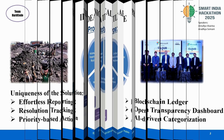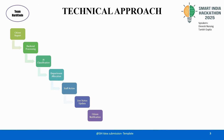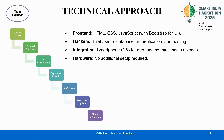The real power of our solution lies in its intelligent backend. When a report is submitted, an AI engine automatically classifies the issue and allocates it to the correct government department. This automated department routing streamlines the process and ensures that issues are handled by the right people from the start.